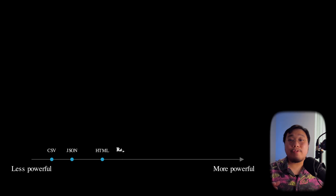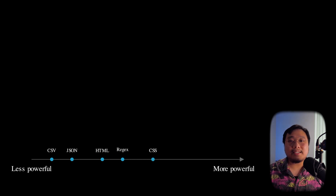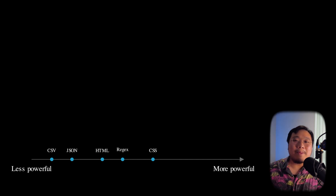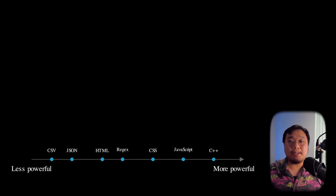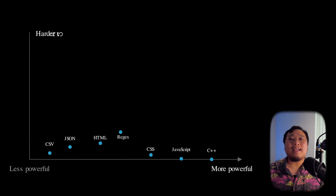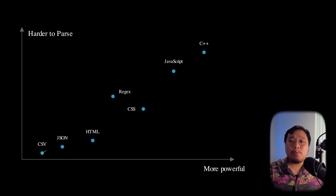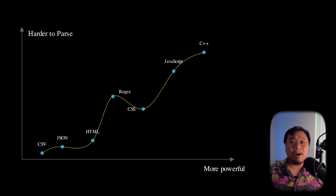In the middle, we have something like regular expressions — although technically not a language — and CSS. These are slightly more powerful; they have their own logic, but not as powerful as Turing-complete languages. And on the right, the most powerful ones are the Turing-complete languages like JavaScript, C++, etc. So this is the power spectrum of computer languages. And if we plot these against how easy it is to parse each of them, we get something like this — less powerful languages tend to be easier to parse, making them easier to reuse by other programs.